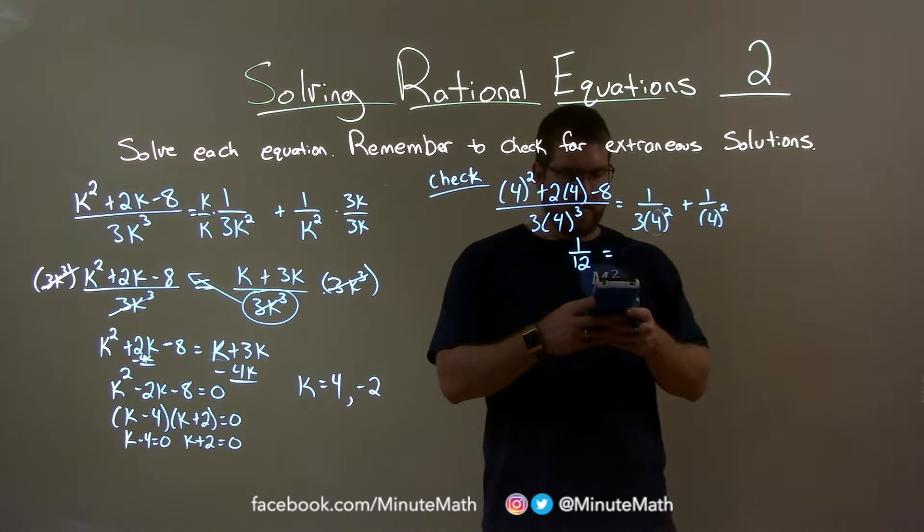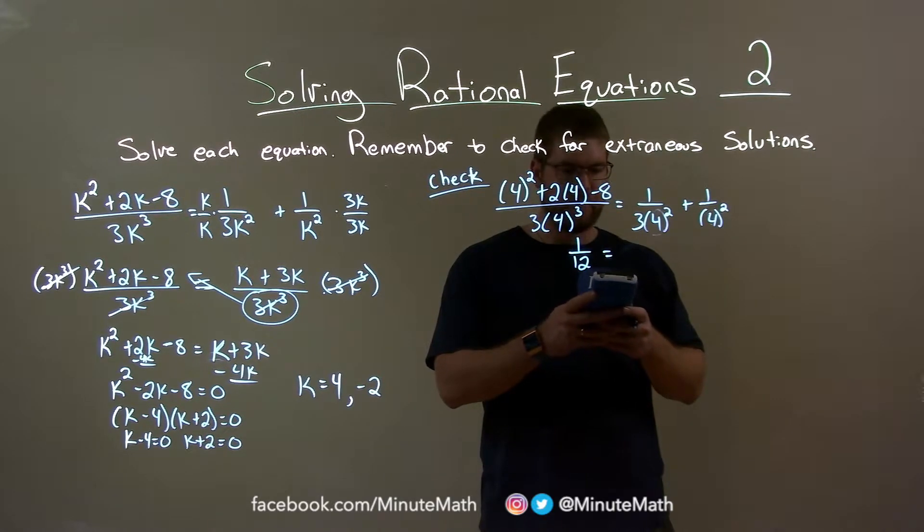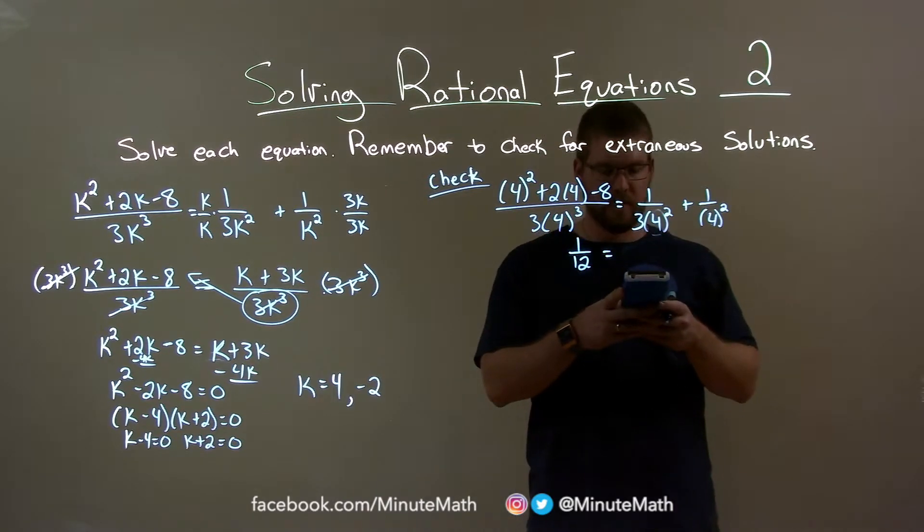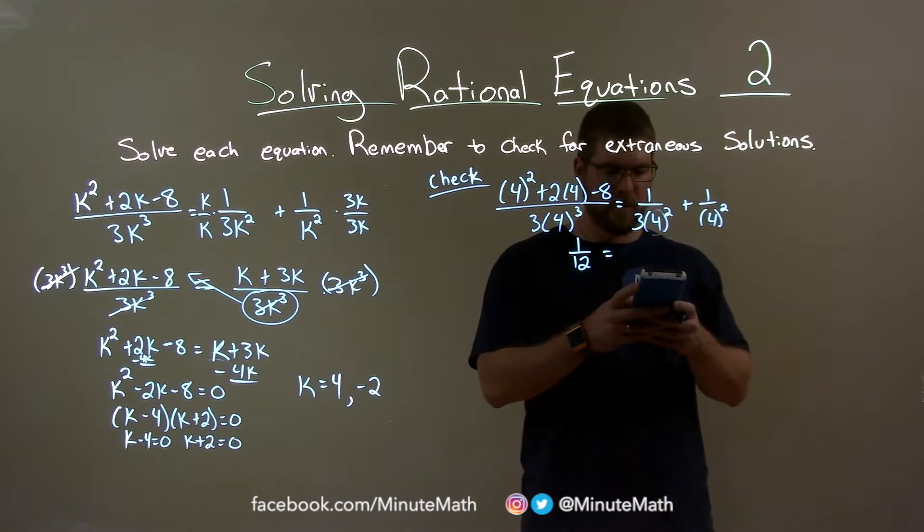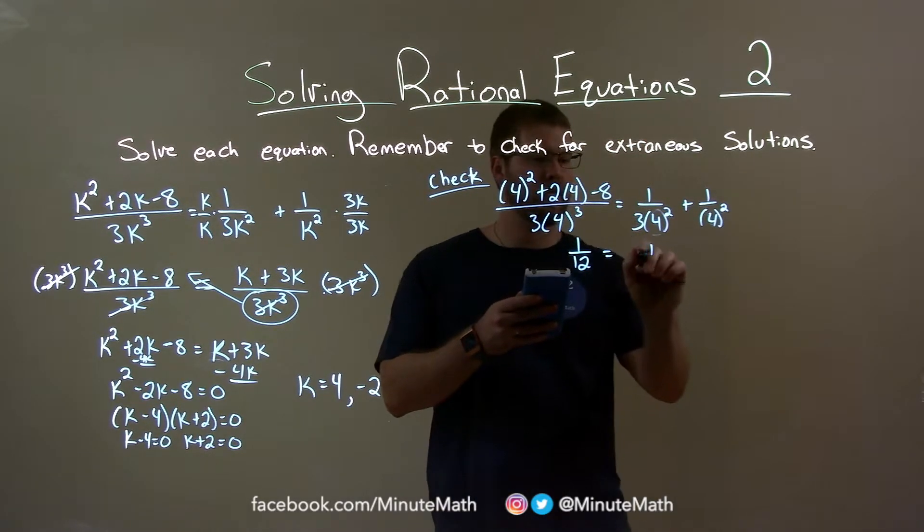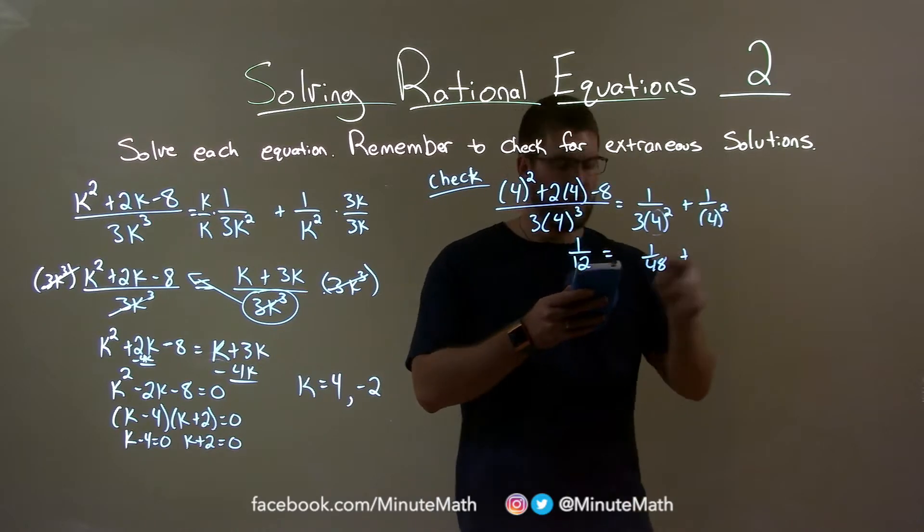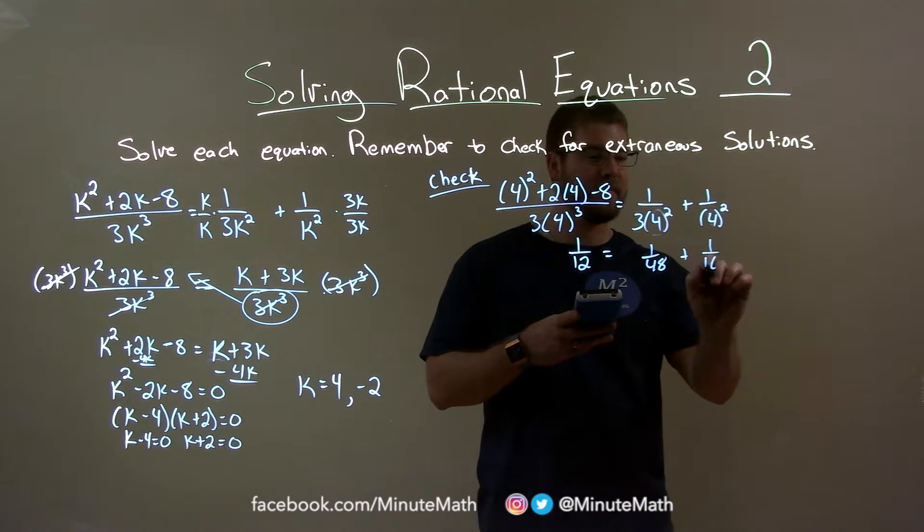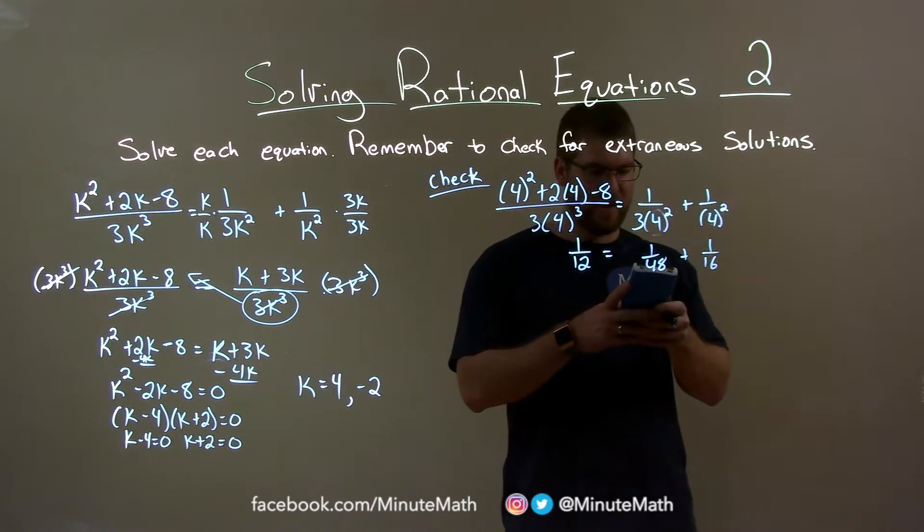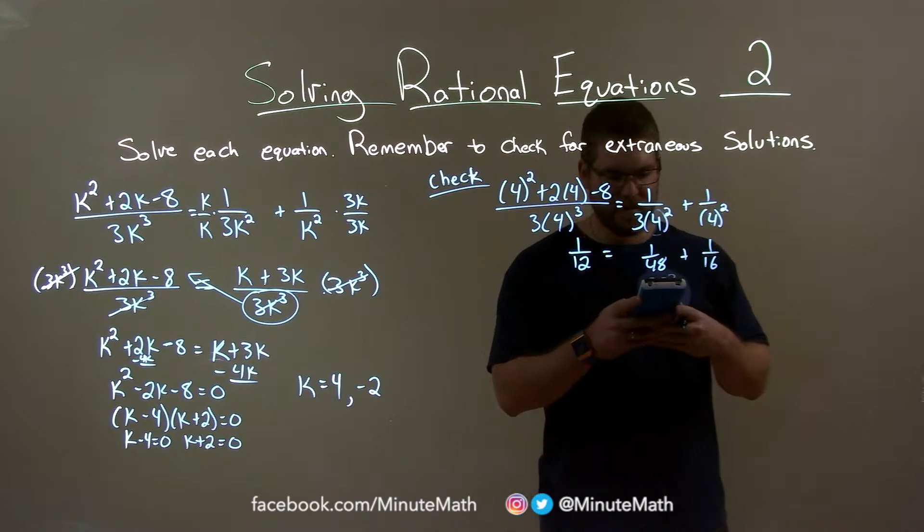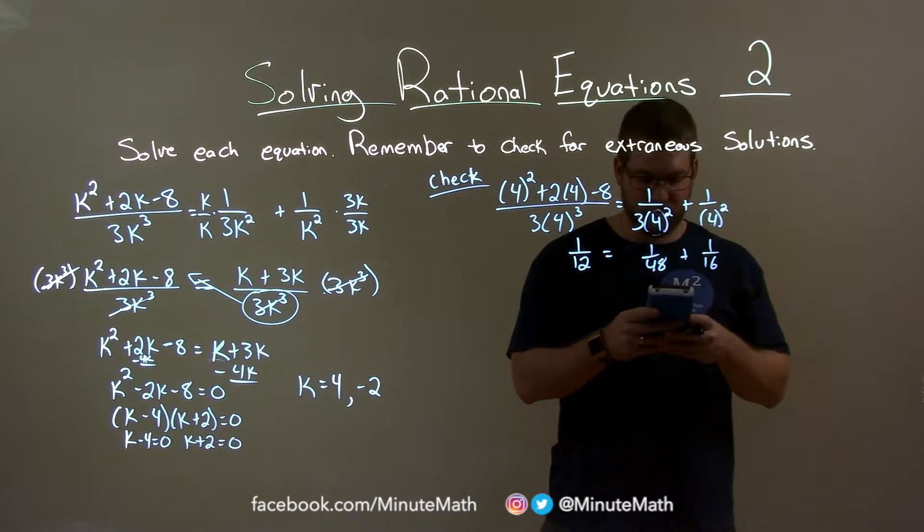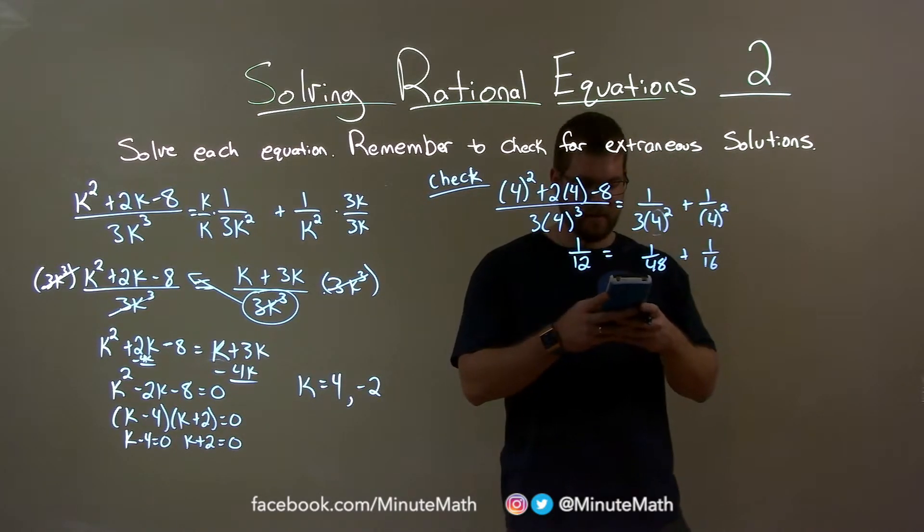1 divided by 3 times 4 squared. 1 divided by 3 times 4 squared, and that is a fraction, that's 1 over 48, and that's 1 over 16. So we add 4 squared and 16. So we add 1 divided by 48 to that, and that fraction is a 1 24. Did I do this right? Divided by 3, can I save this problem? 4 squared.